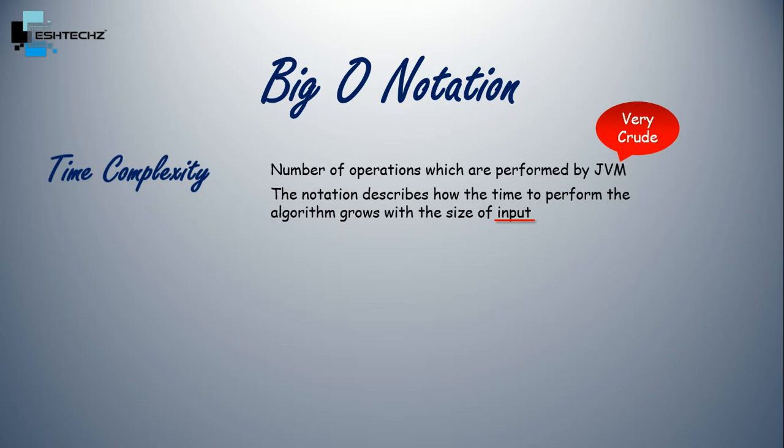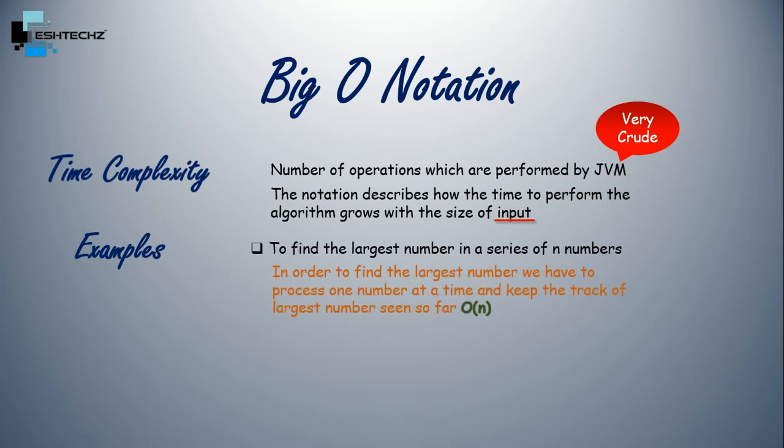Now let's understand this with a couple of examples. The first example is to find the largest number in a series of N numbers. So in order to find the largest number, we have to process one number at a time and keep track of the largest number seen so far, which means we will have to iterate over the whole series.